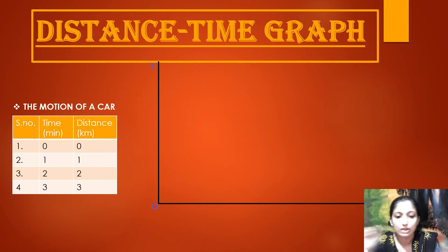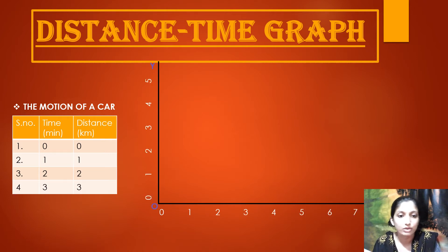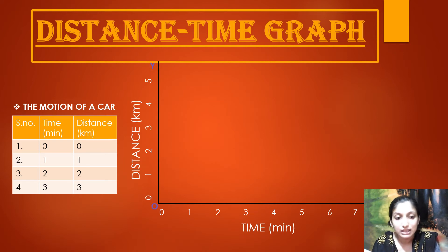We number the x-axis: 0, 1, 2, 3, 4, 5, 6, and similarly the y-axis: 1, 2, 3, 4, 5, 6. The x-axis represents time in minutes and the y-axis represents distance in kilometers.